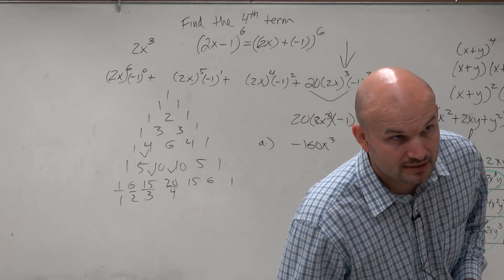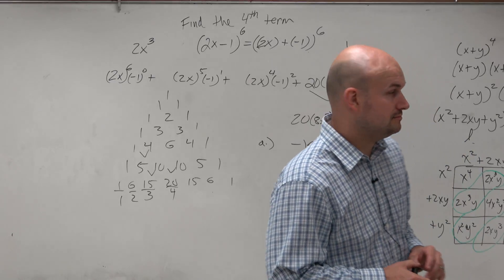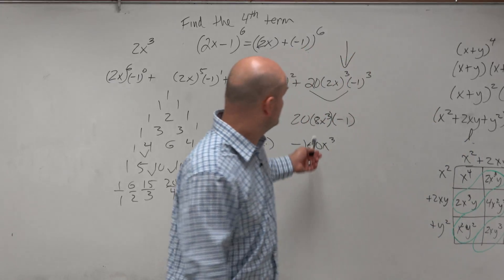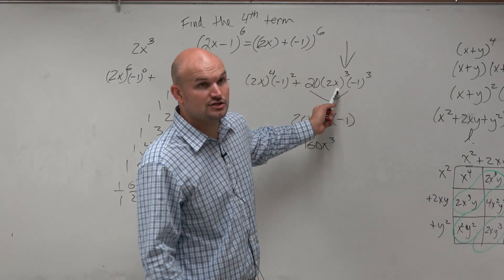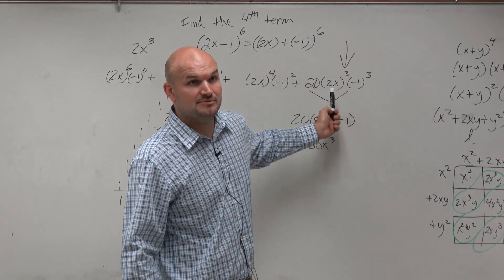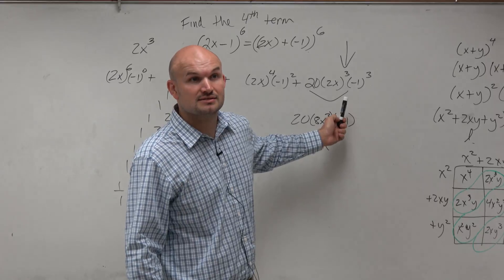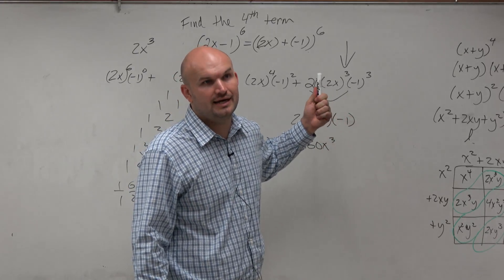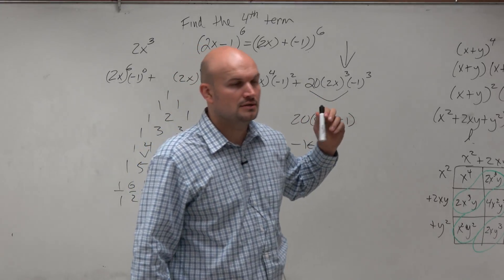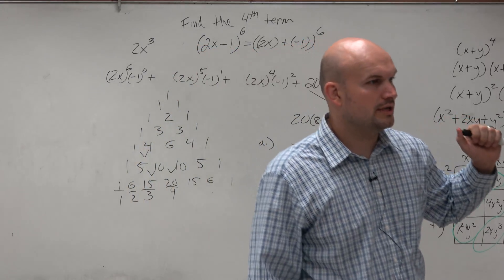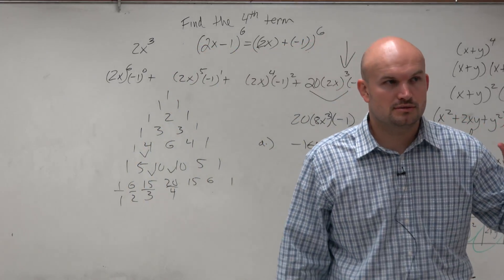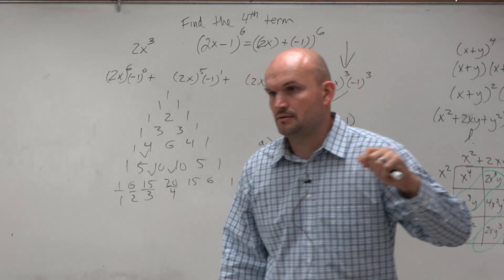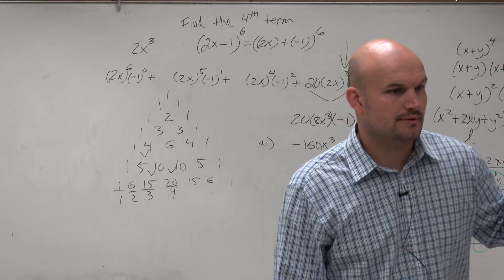Question: how do you get the 8x cubed? (2x) cubed: 2x times 2x is 4x squared, times 2x again, which gives you 8x cubed. Any other questions? No? OK.